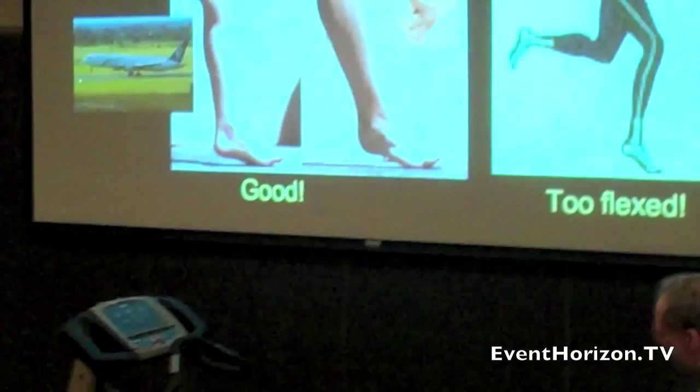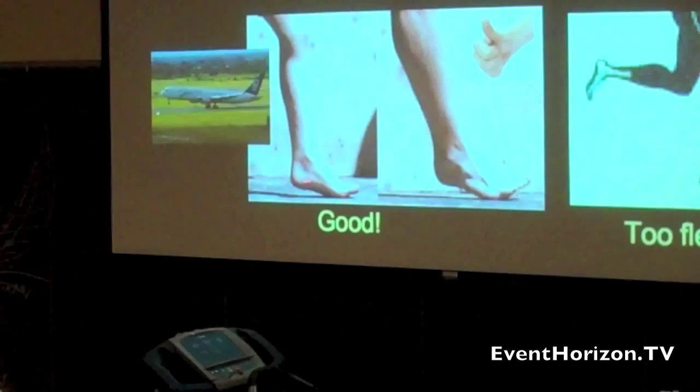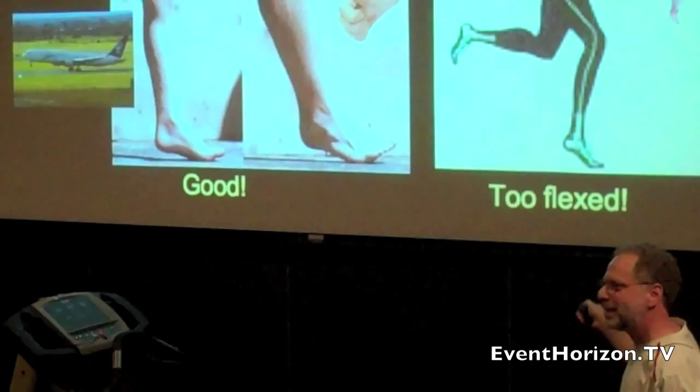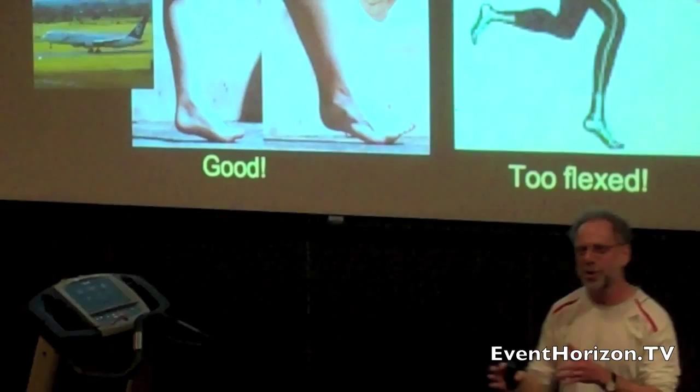This is a diagram I just pulled off the internet about, this is supposed to be good form. If you run like that, you're going to be in pain. This is really bad. This is going to put huge moments around your ankle. You're going to wish you hadn't tried forefoot striking. Don't do this. You want to land very gently, not like that.